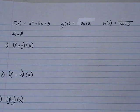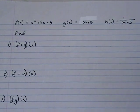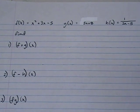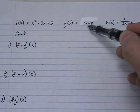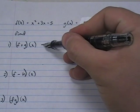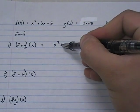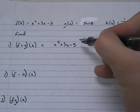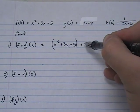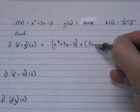The first one I've asked you is to find f plus g of x. What we're telling you is to take function f and function g and add them together. So we're going to say x squared plus 3x minus 5 plus 5x plus 8.